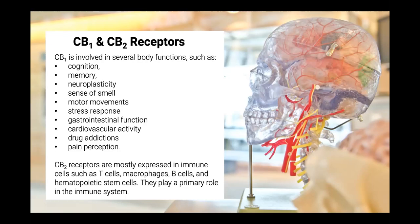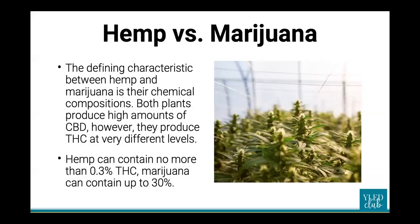To put it simply: cannabinoid 1 is mainly in the brain, and cannabinoid 2 is mostly expressed in the immune system.